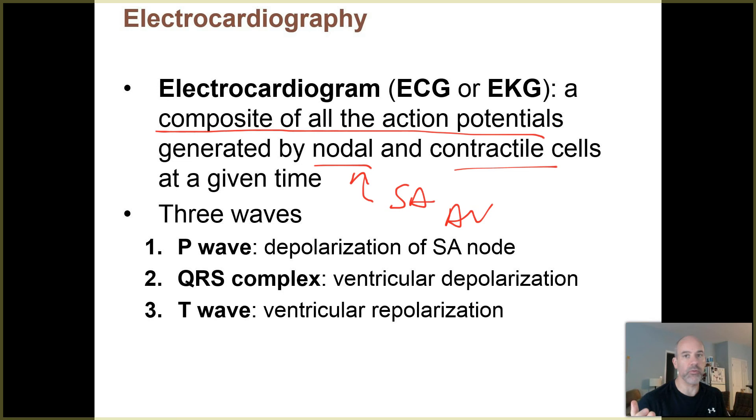Your contractile cells are all your cardiac muscle cells, which make up, by far, the bulk of the walls of the atria and the ventricles.